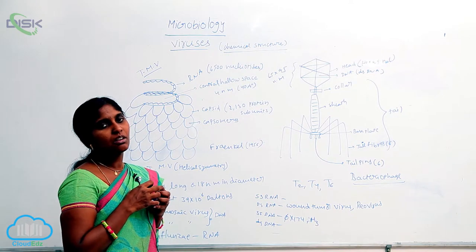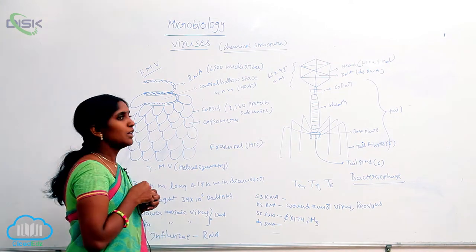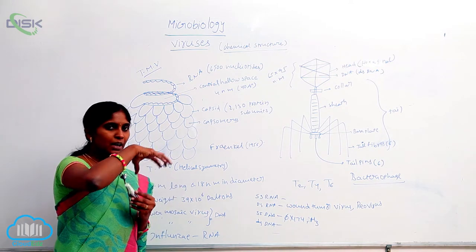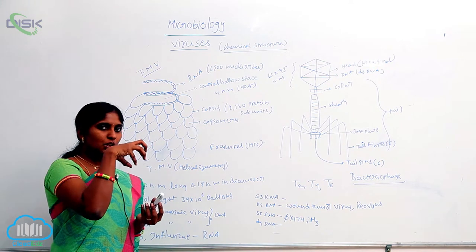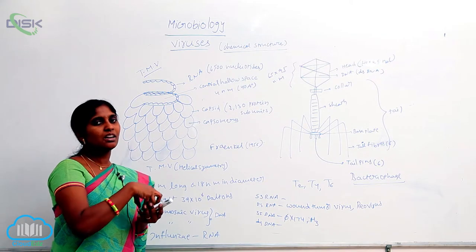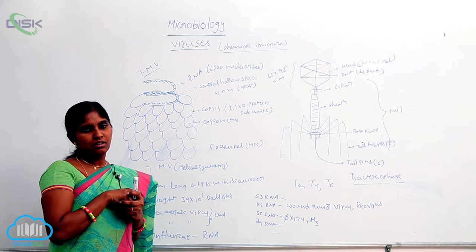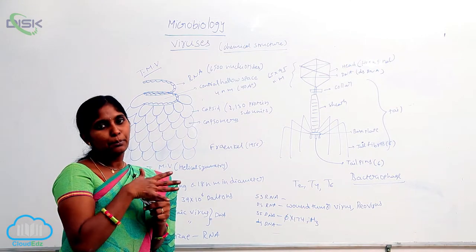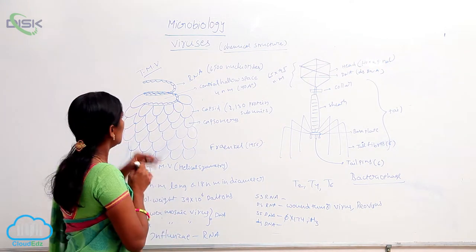So, the protein coat is called capsid. And, the protein coat, when it is wrapping the DNA, it leaves the central hollow space. So, at the central hollow space, the RNA is wrapped.